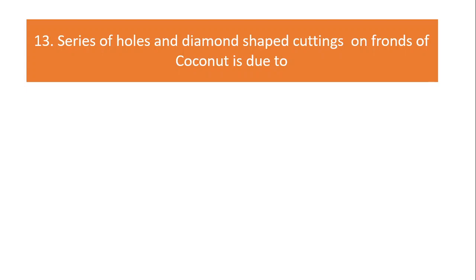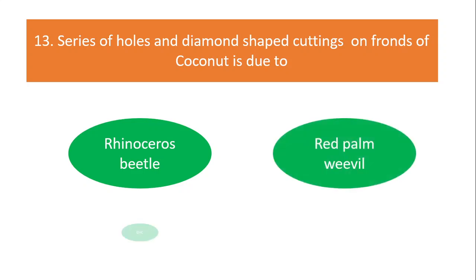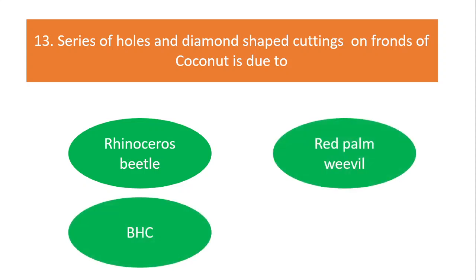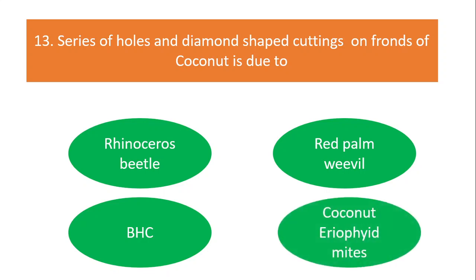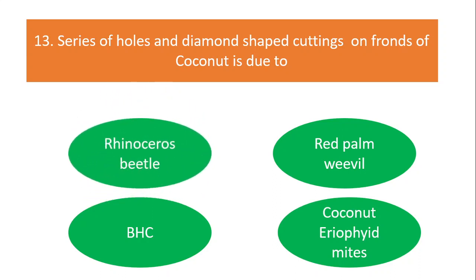Series of holes and diamond-shaped cuttings on fronds of coconut is due to rhinoceros beetle, red palm weevil, BHC brown-headed caterpillar, or coconut eriophyid mites? The answer is rhinoceros beetle.